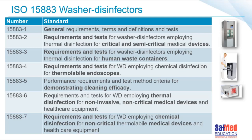Part three covers requirements and tests for washer disinfectors used for human waste containers — bedpan washers and urinals. Part four covers washer disinfectors for cleaning thermally labile endoscopes, our flexible scopes. Part five is all the test methods used to demonstrate cleaning efficacy — for example, an STF load check that helps verify whether the washer is functioning effectively. Parts six and seven are newer — part six for machines using a thermal disinfection process and part seven for machines using a chemical disinfection process, both for non-invasive, non-critical devices.